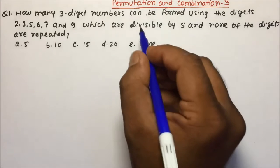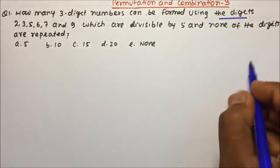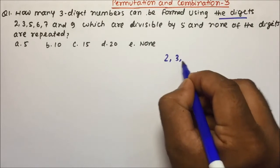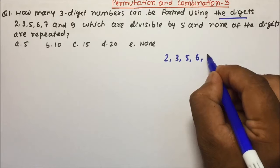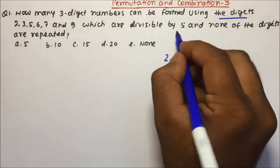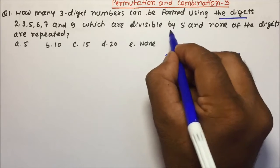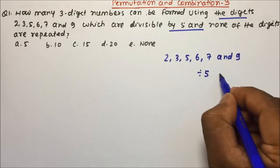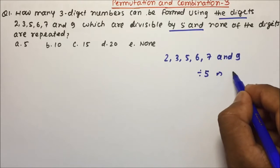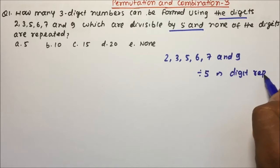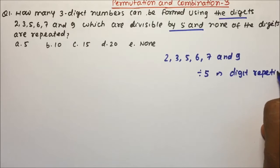How many 3-digit numbers can be formed using the digits 2, 3, 5, 6, 7, and 9, which are divisible by 5 and none of the digits are repeated?